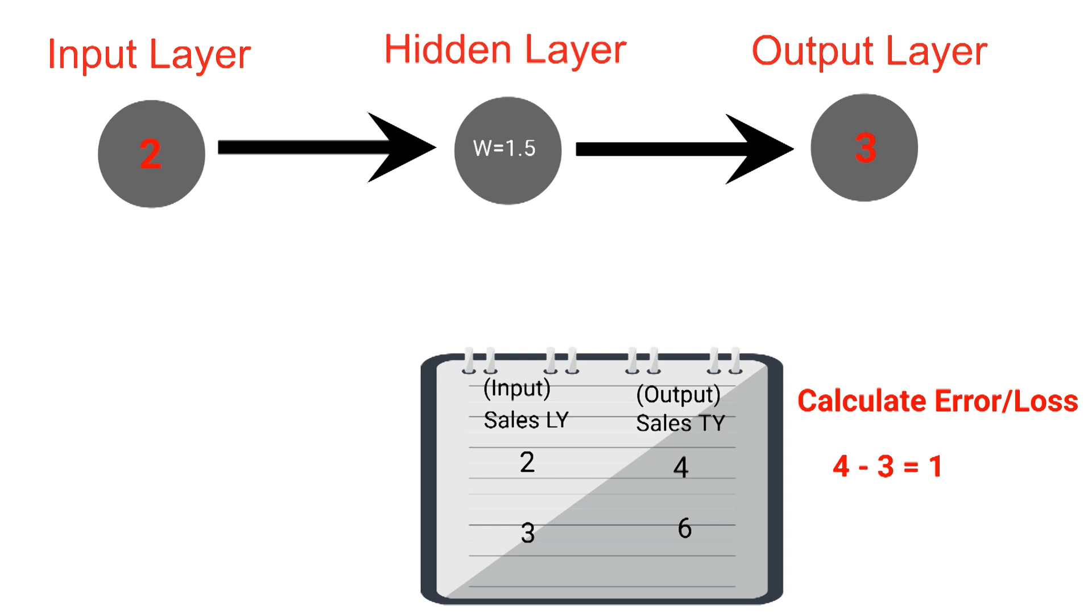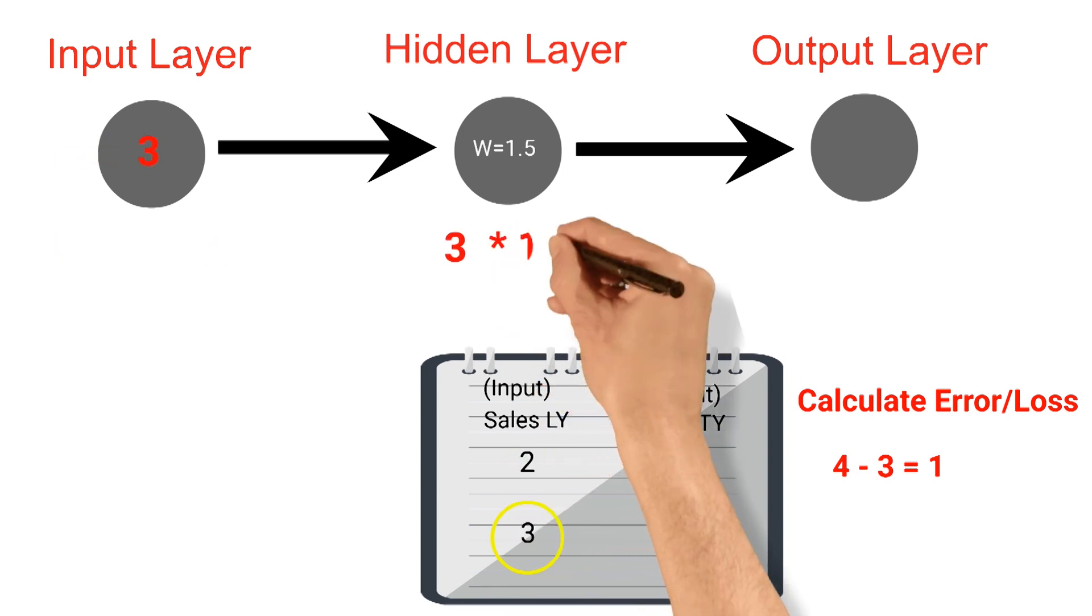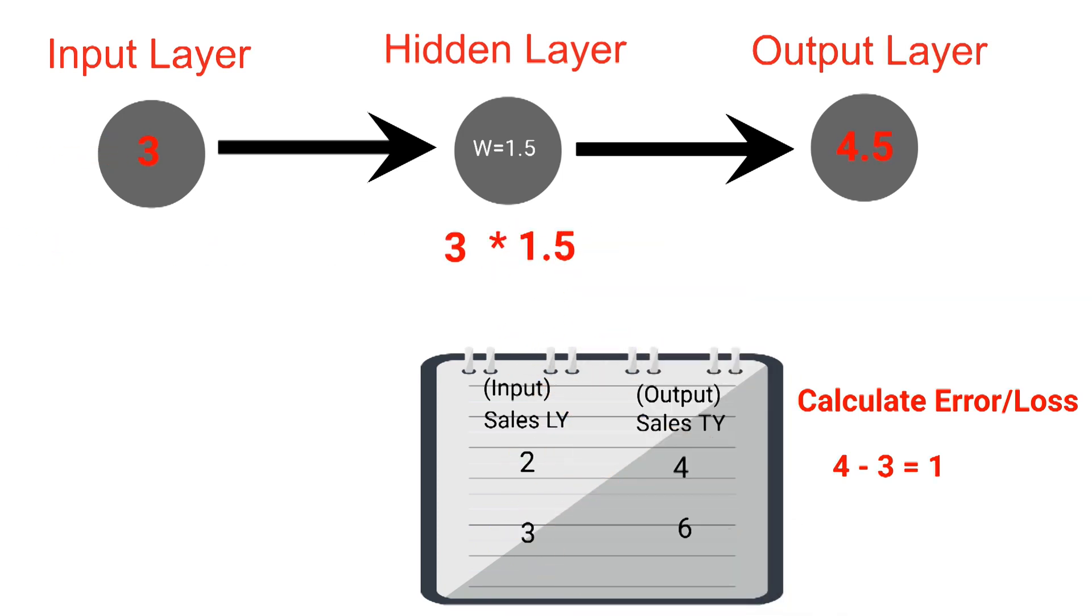Let's feed in our next training example, our next input of 3. We'll feed that forward in our neural network, multiply by our weight of 1.5, and that gives us an output of 4.5. We know based on our training data that the answer should have been 6. So let's calculate our error. 6 minus 4.5 is 1.5. We're done processing our training data. So let's calculate the total error. 1 plus 1.5 is 2.5.